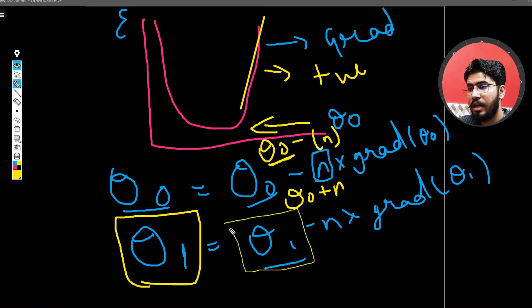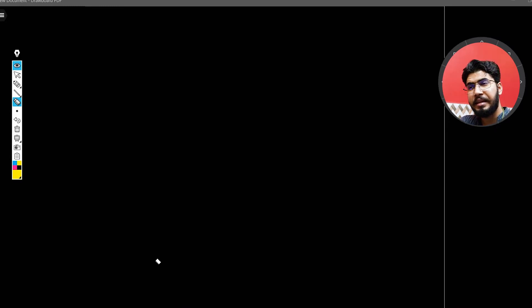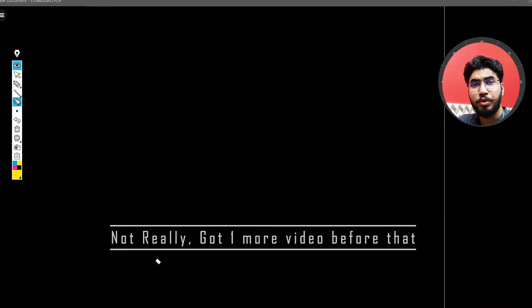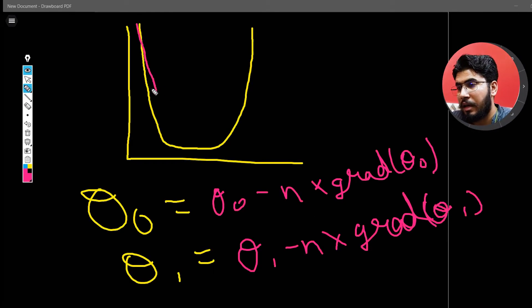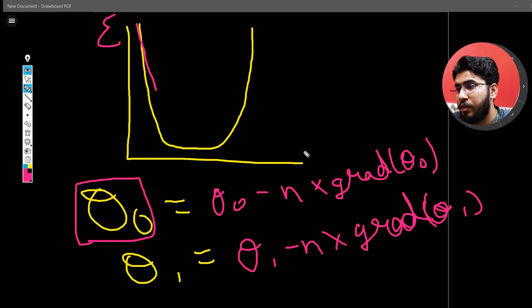You will understand all of this once we see the code. This is the math behind linear regression, and in the next video we will implement linear regression from scratch using gradient descent — so stay tuned. One thing I forgot: how are you going to stop updating the values when you have reached minimum error?